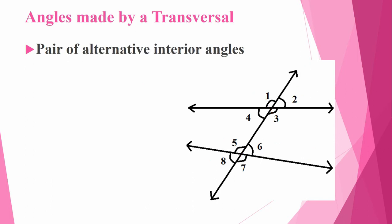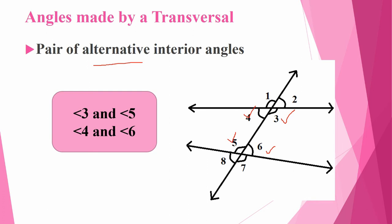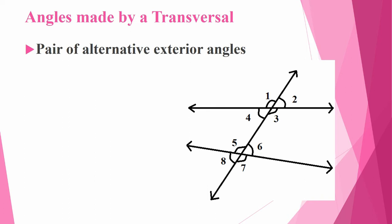Next, pair of alternative interior angles. We know interior angles means inside — that is angles 3, 4, 5, and 6. Here they have mentioned 'alternative,' meaning opposite. For angle 3, the alternative is angle 5 — the opposite one. For angle 4, the opposite is angle 6. So angle 3 and 5, and angle 4 and angle 6 are alternative interior angles.